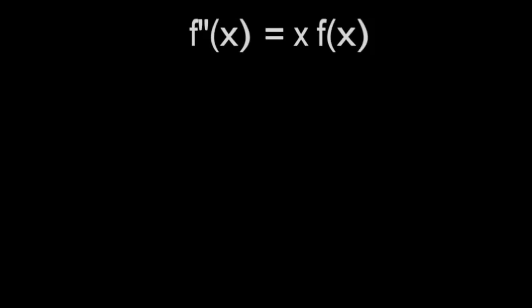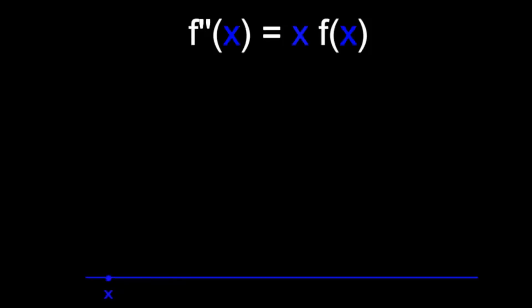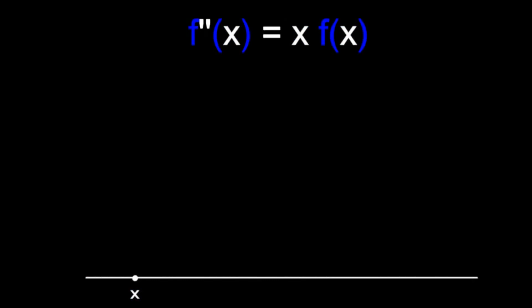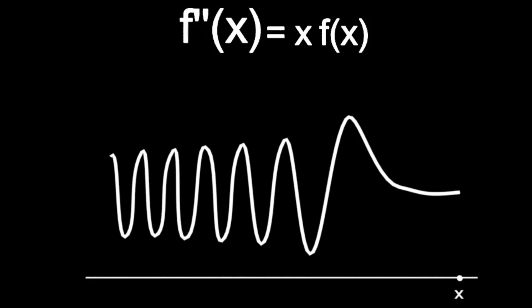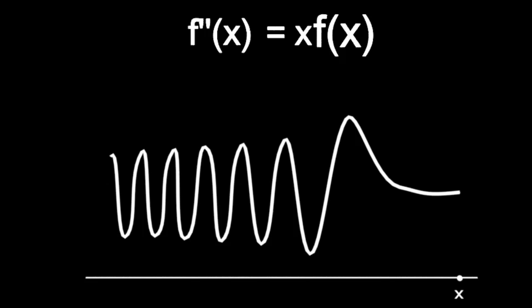Returning to the Airy equation: as mathematicians, for us now, x — which we call the variable — represents any number, and we visualize it as a point on the continuous number line. f of x represents a function of the variable x; it is a quantity which can change if x changes. Then the Airy equation says that the second derivative of f of x — in other words, the rate of change of the rate of change — is proportional to the function f of x itself.